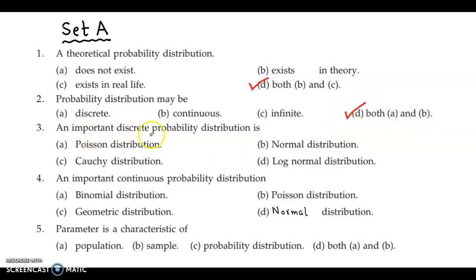Next, an important discrete probability distribution is. Now out of the given, the only discrete probability distribution here is the Poisson distribution. The remaining three are continuous probability distributions.